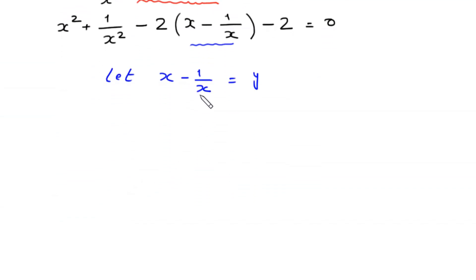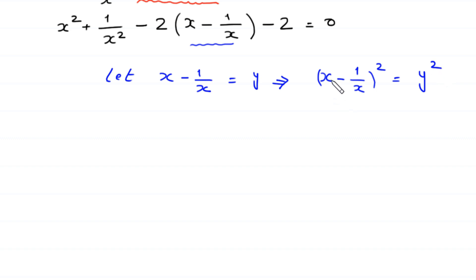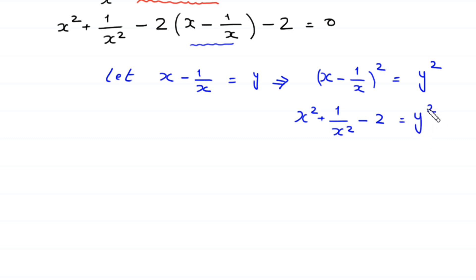If we take the square of both sides of this equation, then x minus 1 over x, squared, equals y squared. Now x minus 1 over x squared expands to x squared plus 1 over x squared minus 2, equal to y squared. Moving negative 2 to the right side gives us x squared plus 1 over x squared equals y squared plus 2.